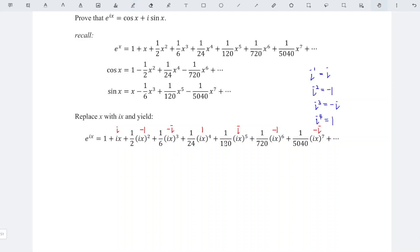And we replace and remove the power, then we should obtain e to the power of ix is equal to 1 plus ix minus 1 over 2. Replace i squared with minus 1 and so on.